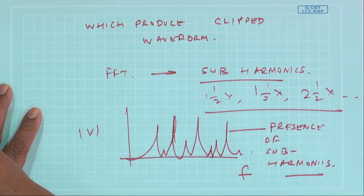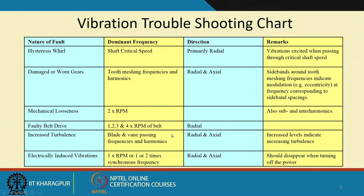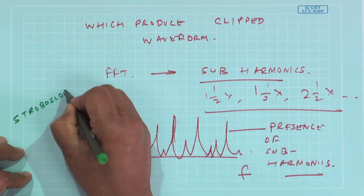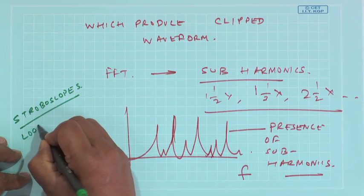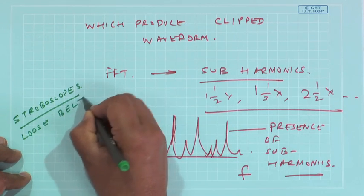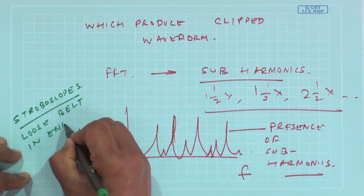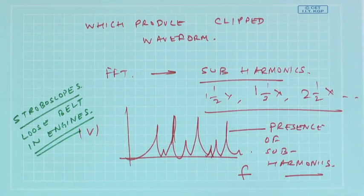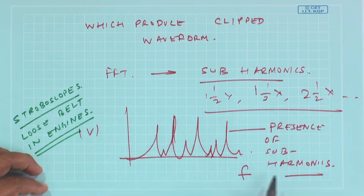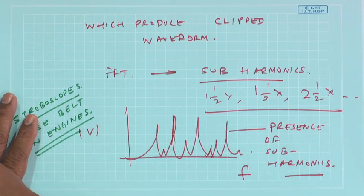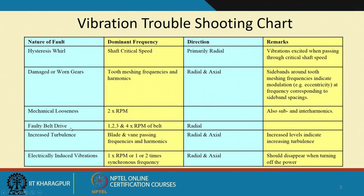You will come across machines where there are lot of belt drives. When I told you to detect looseness, we can use what is known as stroboscopy, like finding out loose belts in engines. This can be found out in such systems. In a faulty belt drive, the belt RPM, particularly in the radial directions.